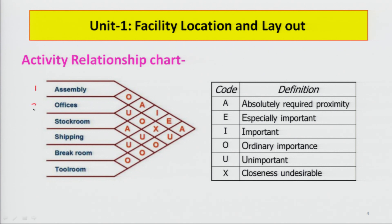Suppose we have six departments: assembly, office, stock room, shipping, break room, and tool room. To build the ARC, department names are written along horizontal lines. The first and last lines are joined to form a triangular chart, and parallel lines are drawn to create blocks. Each block represents the relationship between two specific departments.